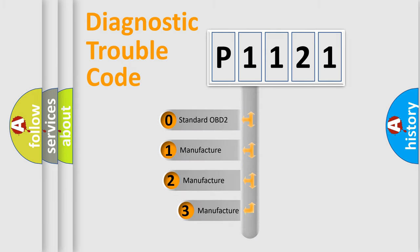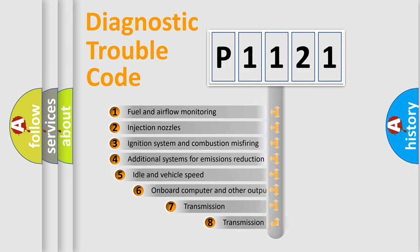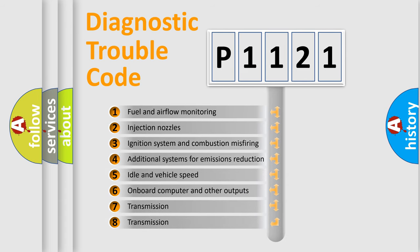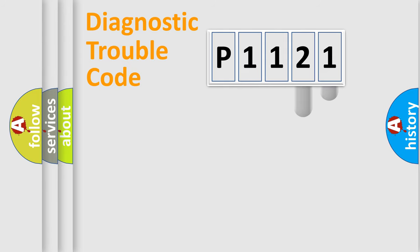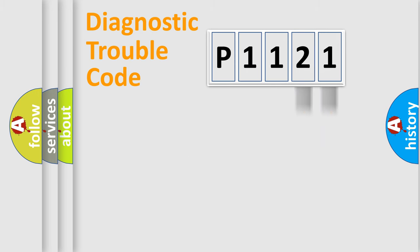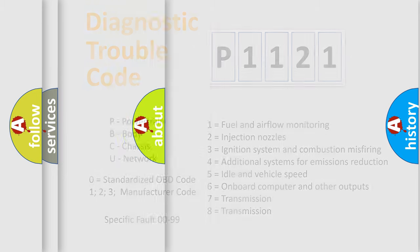If the second character is expressed as zero, it is a standardized error. In the case of numbers 1, 2, or 3, it is a more specific expression of a car-specific error. The third character specifies a subset of errors. This distribution is valid only for the standardized DTC code. Only the last two characters define the specific fault of the group, and such division is valid only if the second character is expressed by the number zero.